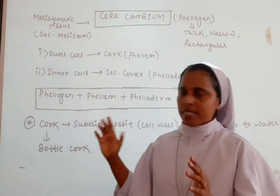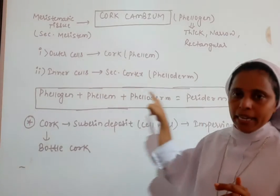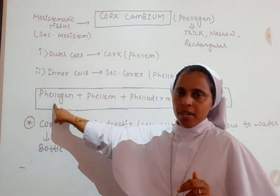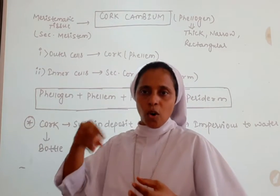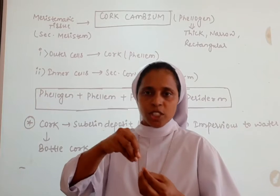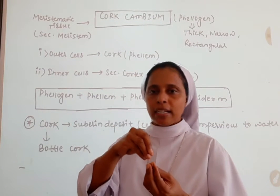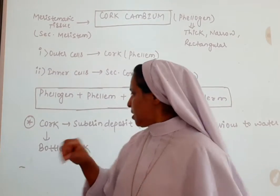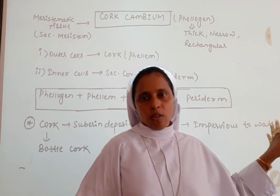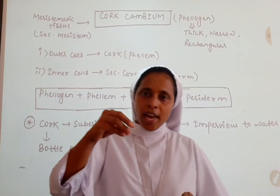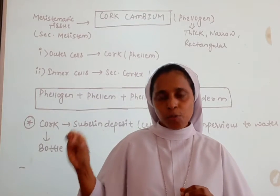Phellem, phellogen, and phelloderm together comprise the periderm. Cork is impervious to water because suberin is deposited in it. You might have seen bottle corks — that is an example of cork cambium. Water will not move through the bottle cork because suberin deposit is present.